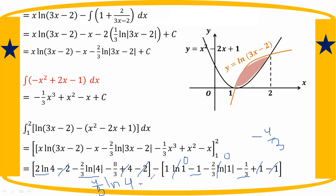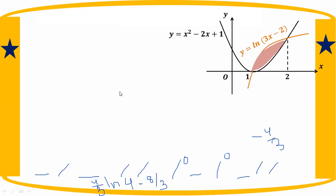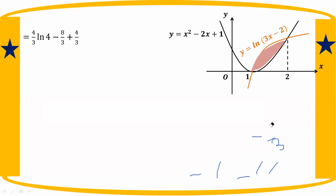We have 4 by 3 and minus 8 by 3. Using 4 by 3 and minus 8 by 3 in the final computation, this class gives negative 4 by 3, and ultimately 4 by 3. So this is the area of the region.